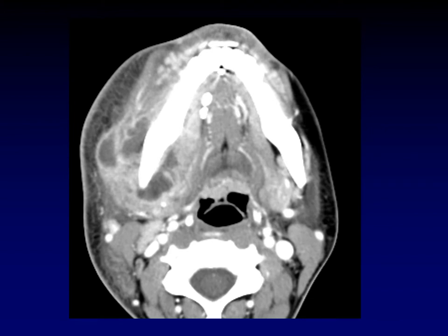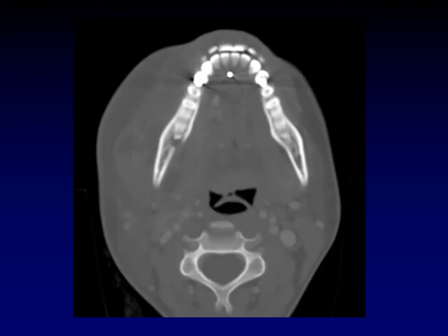This is a more classic appearance of an abscess in the masticator space. Again, you can see how it's displacing that parapharyngeal fat posteromedially. When you see an infection in the masticator space, the most likely culprit is going to be the teeth, like this periapical abscess. You can see the break in the cortex through which the infection has spread into the masticator space.